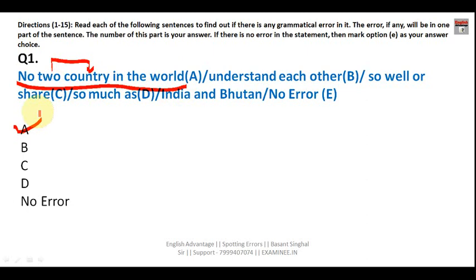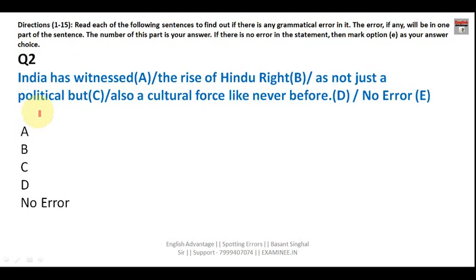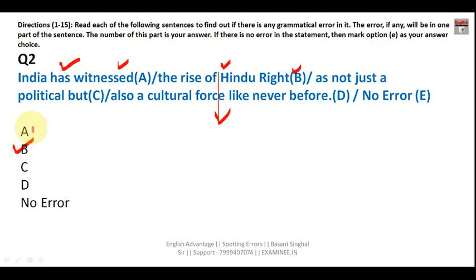Question number two: 'India has witnessed the rise of Hindu right as not just a political but also a cultural force like never before.' The verb 'witnessed' followed by 'has' is correct. However, 'Hindu right' is a particularized noun — we are talking about a specific entity — so it should be preceded by the definite article 'the.' The error lies in Part B: it should read 'the Hindu right.'